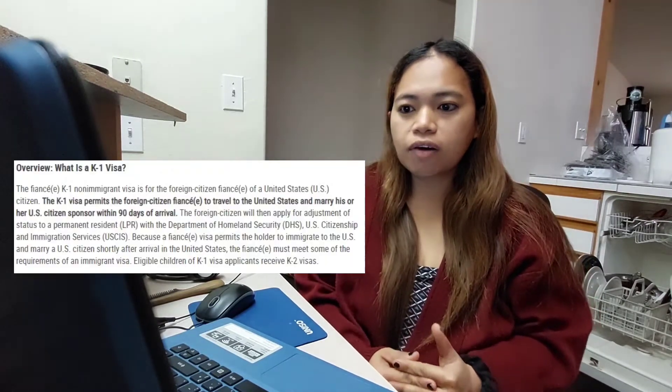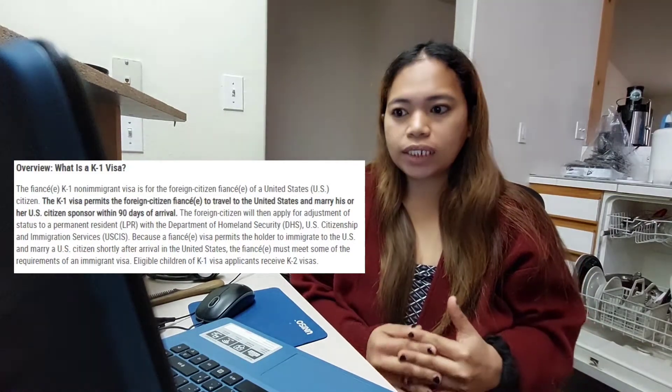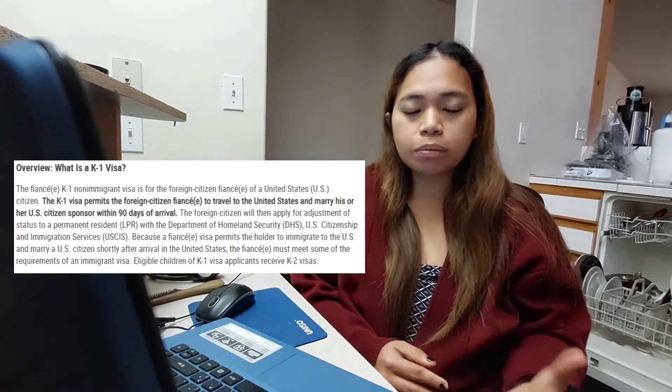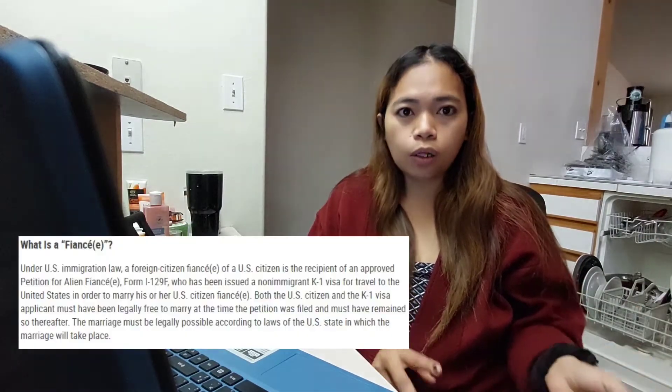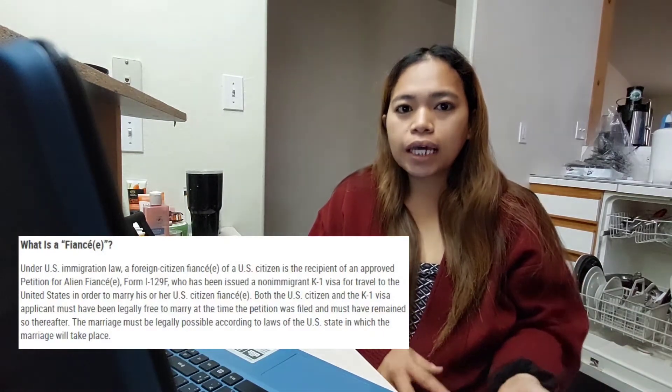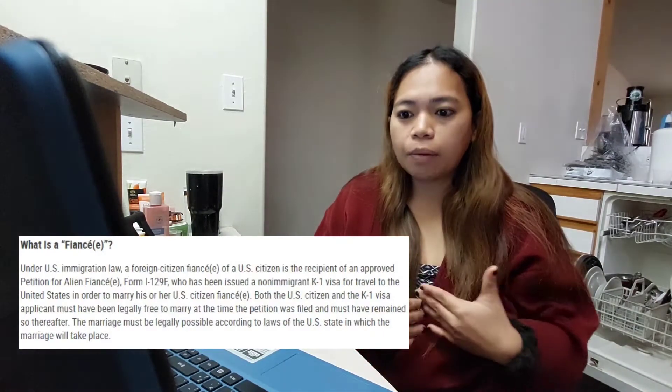This will be a series of videos regarding the K-1 or fiancé visa. First, let's take time to know more and understand what a K-1 visa is, its eligibility, and requirements needed. K-1 is a type of visa for the fiancé or fiancée of a U.S. citizen. One of you must be a U.S. citizen — that's the petitioner. The foreign fiancé is what we call the beneficiary. In our case, Tim is the petitioner and I'm the beneficiary.